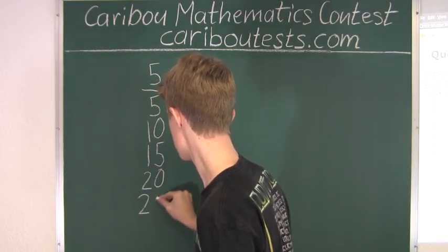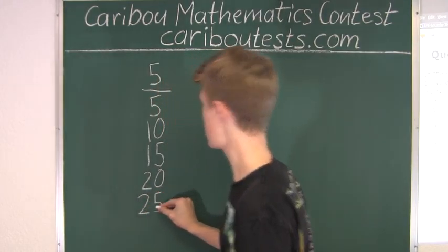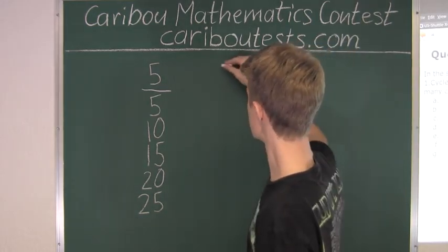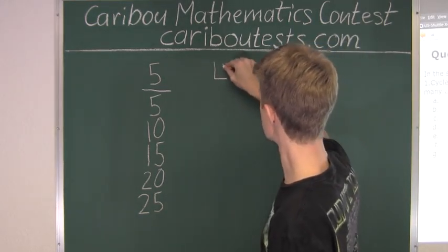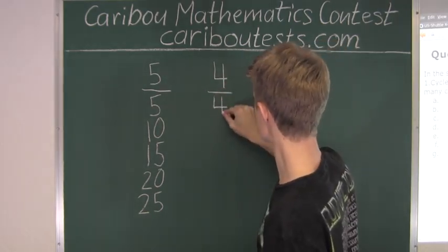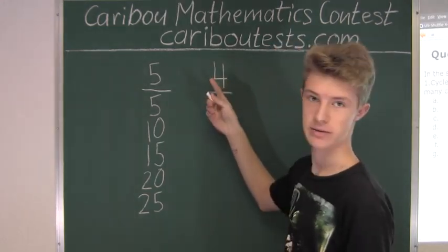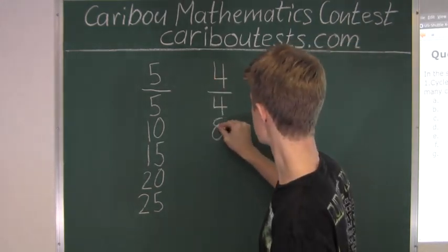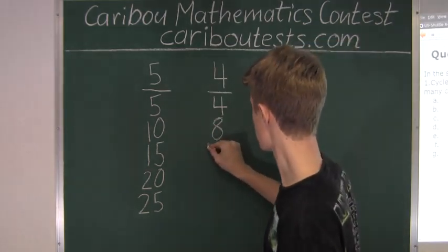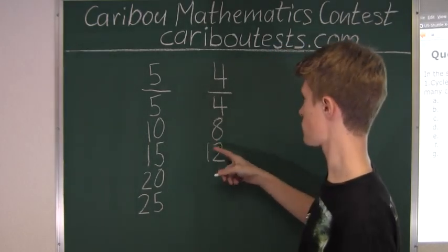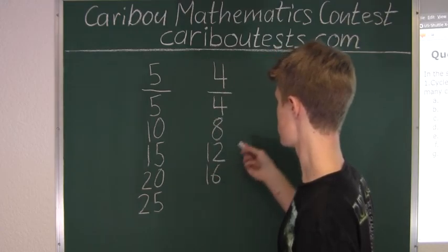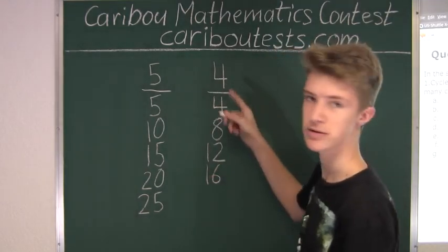Alright, now let's look at the multiples of 4. So of course we start with 4, then we do 4 plus 4, which is 8, then we have 8 plus 4 is 12, then we have 12 plus 4 is 16, and the last one we will do just because we will have 16 plus 4 is 20.